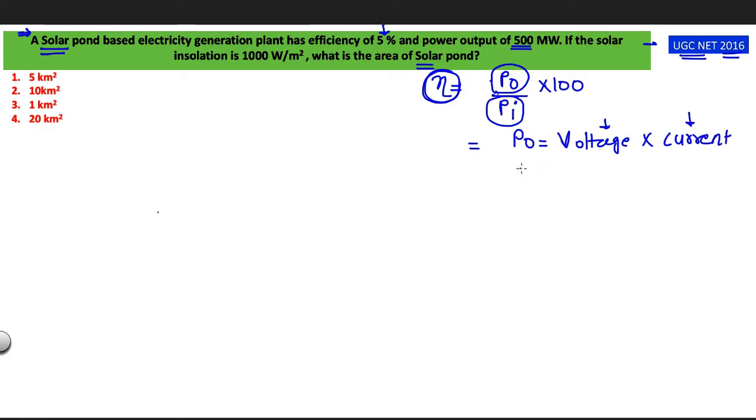Now this can be written in other forms also, like for power output I can write voltage into current. This can be my power output and power input can also be written as solar insulation, I am writing SI into area, area of my solar pond.